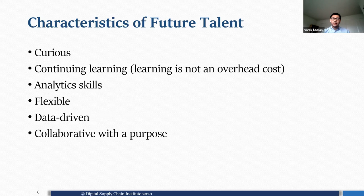By talking to all these companies, we found key characteristics of future talent. All supply chain executives we spoke with agree that new hires should be curious and committed to continuous learning — learning is not an overhead cost or a one-time event. A person has to be curious every day; otherwise they stagnate and won't be effective. To support this, a person always needs to have analytical skills, be flexible, and be data-driven.